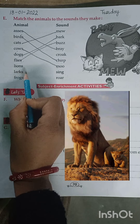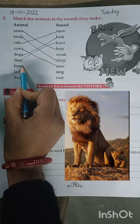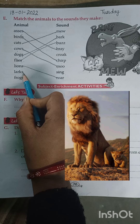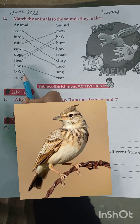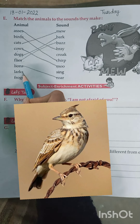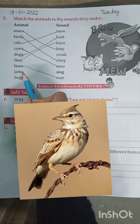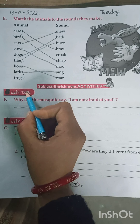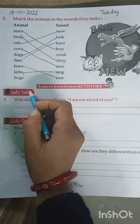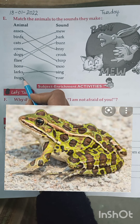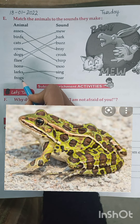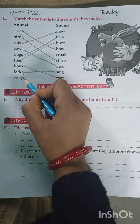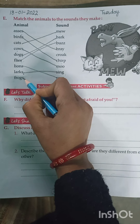Lions — the sound of lions is Roar. Larks — larks is a kind of sparrow, so larks Sing. Frogs — the sound of frogs is Croak.